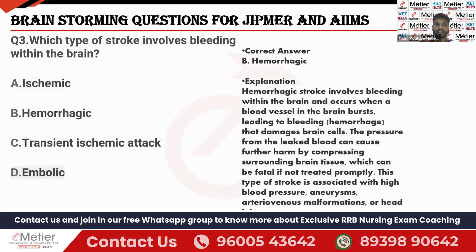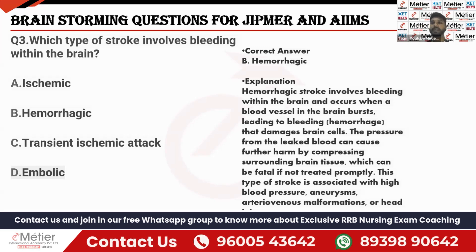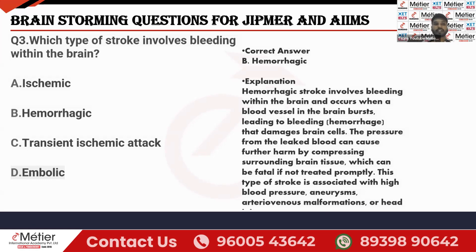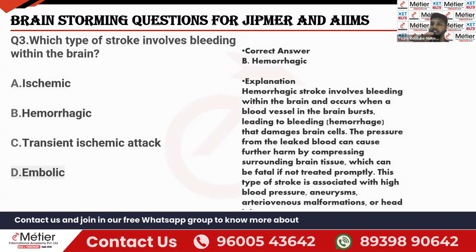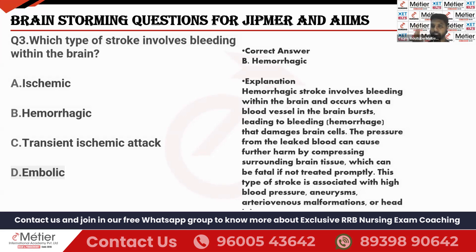Ischemic stroke is due to occlusion — there is no bleeding. A clot or plaque formation arrests circulation in the brain. Option A is incorrect. Option C, transient ischemic attack, is a mild form — due to mini clots, the patient has stroke-like symptoms for a particular period of time. It is not permanent stroke but is a warning sign that the patient may develop an ischemic stroke in future.